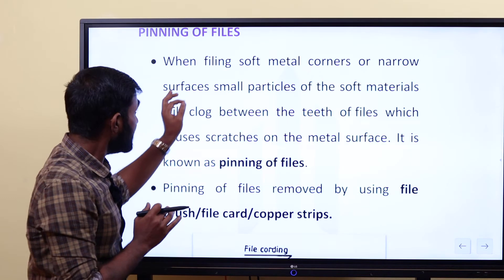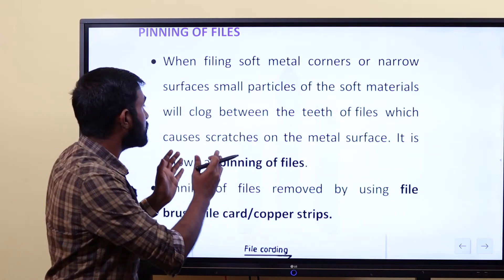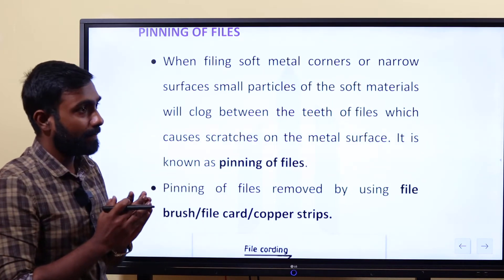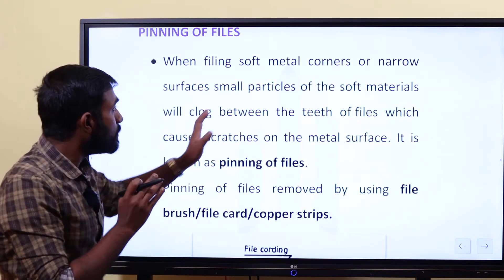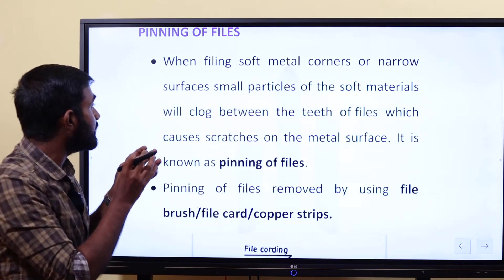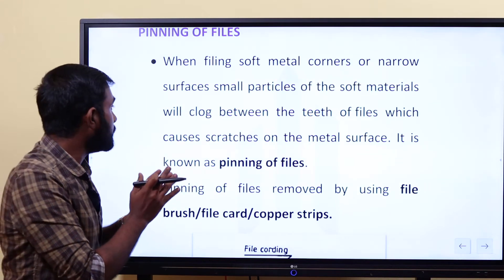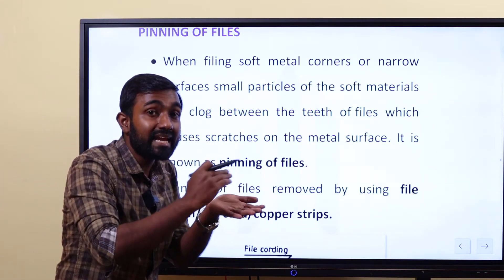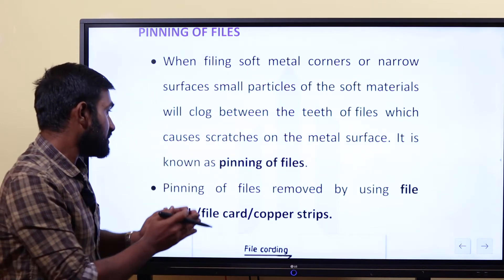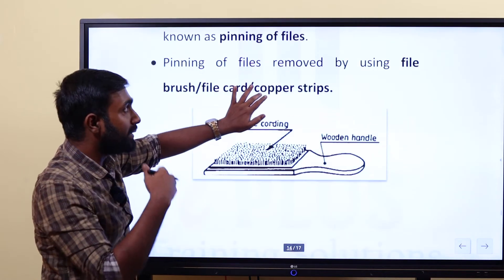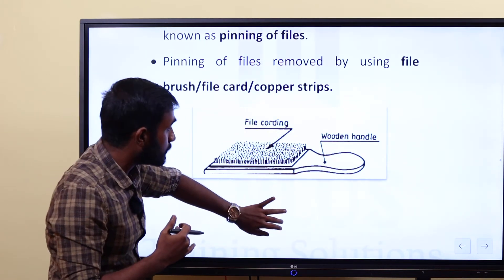Let's see the definition. When filing soft metal corners or narrow surfaces, small particles of the soft material will clog between the teeth of the file, which causes scratches on the metal surface. It is known as pinning of files. That pinning of files is removed by using a file brush, file card, or copper strip.